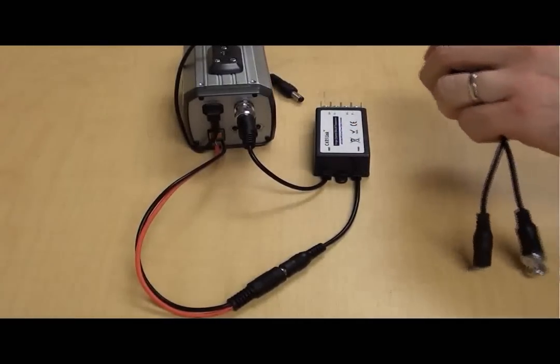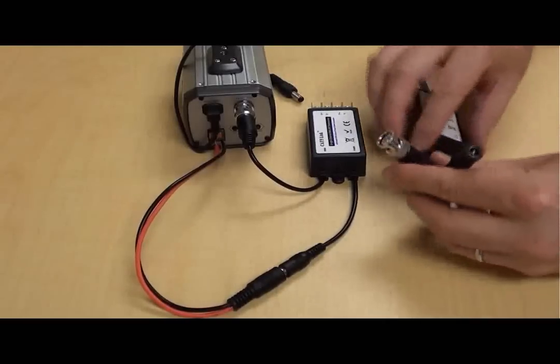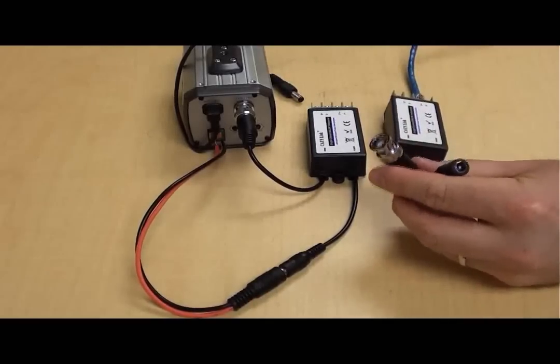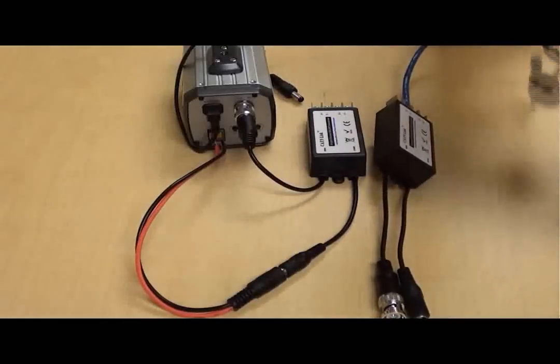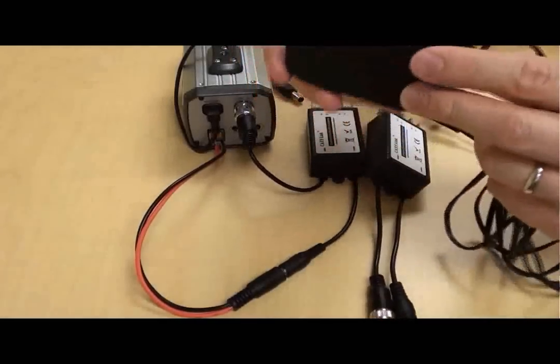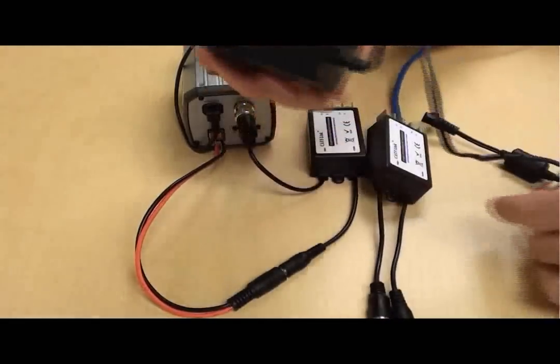On the DVR and power supply balun, we connect the power input on the balun to an individual DC power supply. The power supply would simply connect to a standard wall outlet or surge protector.